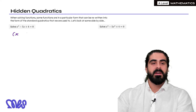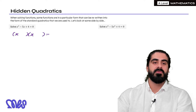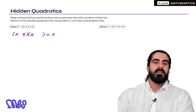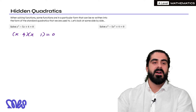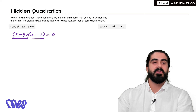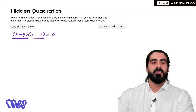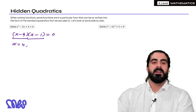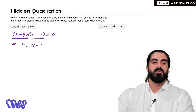So we'd factorize — we would have x and x, we would use 4 and 1, and to make minus 5 we'd need both of them to be negative. Now we have two brackets multiplying together to give 0, so either x minus 4 equals 0, which makes x equal 4, or x minus 1 equals 0, which means x equals 1.